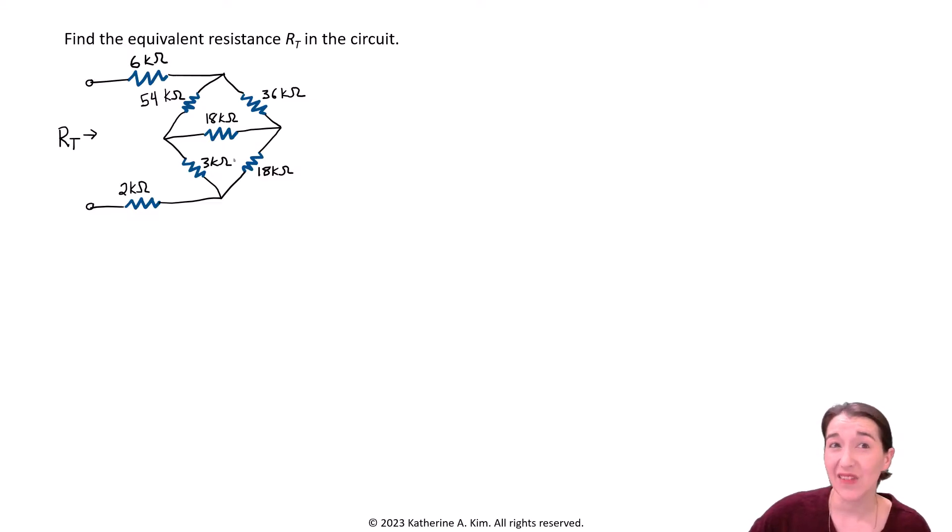So what we're going to have to do is transform some of this circuit. Specifically, we need to transform one of these delta circuits. With delta, you can see these little triangles here, top and bottom. We need to transform one of them into a Y circuit. Before we do that, we need to write down what we're trying to find. We're trying to find RT.